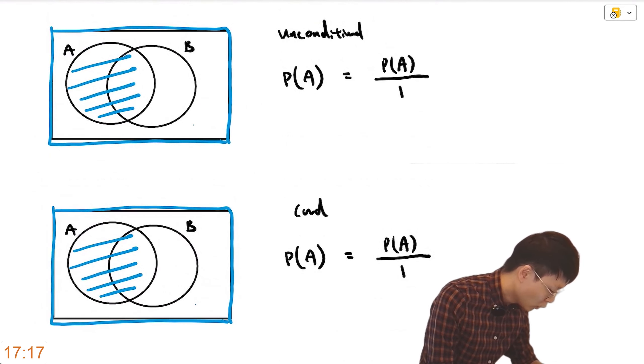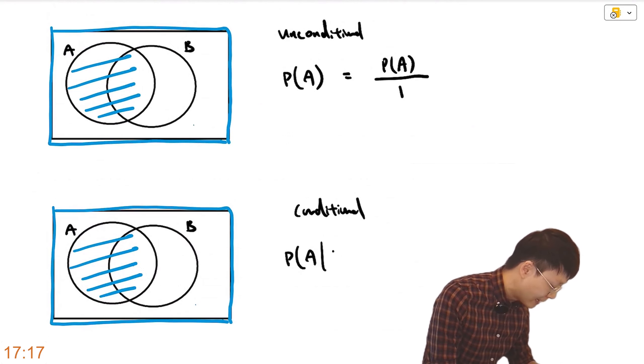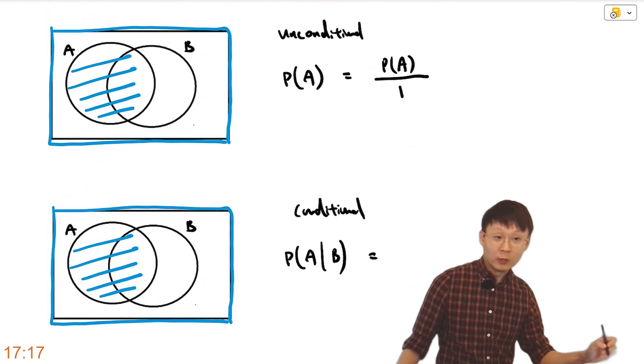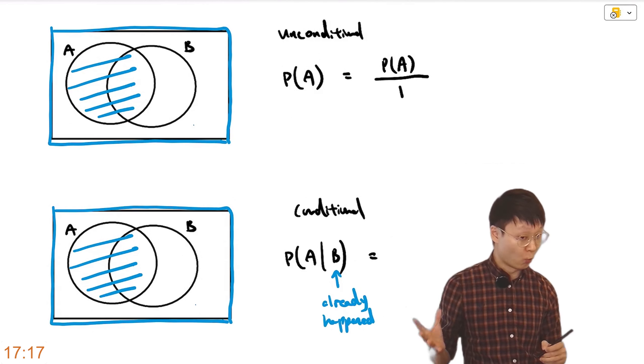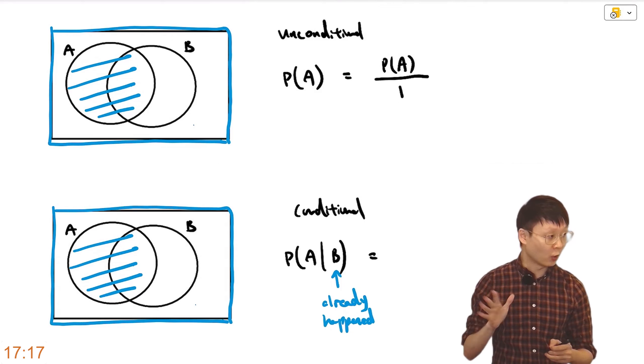Now I want to visualize conditional. A, condition on B. Now, first thing to remember about this, B has already happened. We know for a fact B happened already.